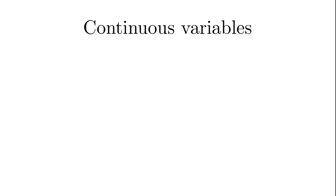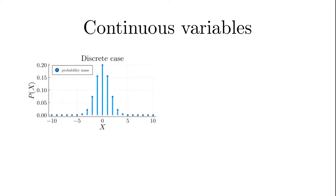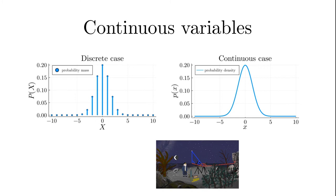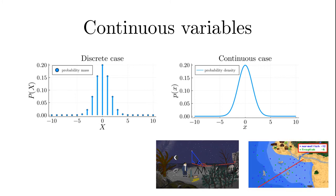Up to this point we have only introduced the rules of probability theory for discrete variables. But continuous variables have also crept into the problems of the last unit, like in the star path problem or the fishing ground problem. We even mentioned probability densities. The values of parameters in the continuous case can take on any real number in a given interval or even on the entire real axis. Now it's time to extend the rules of probability theory to continuous variables.